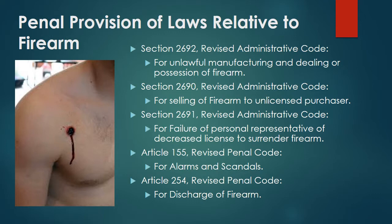Penal provisions of laws relative to firearms: Section 2692 of the Revised Administrative Code for unlawful manufacturing and dealing or possession of firearms; Section 2690 for selling a firearm to an unlicensed purchaser; Section 2691 for failure of a personal representative of a deceased licensee to surrender a firearm; Article 155 of the Revised Penal Code for alarms and scandals; Article 254 for discharge of firearms.